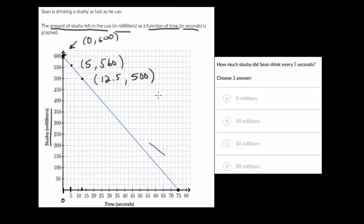What we can do is figure out how much slushy Sean drank every second and then just multiply it by five. It looks like he went down 100 milliliters of slushy in that 12.5 seconds. So you can take your 100 milliliters and divide it by 12.5 and that would give us 8 milliliters per second.